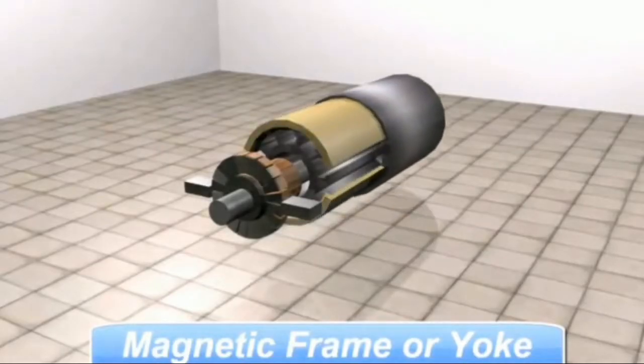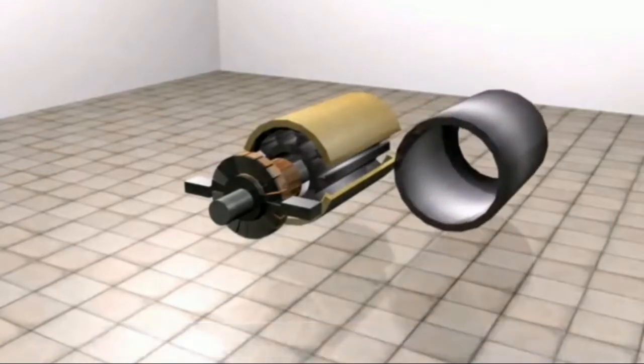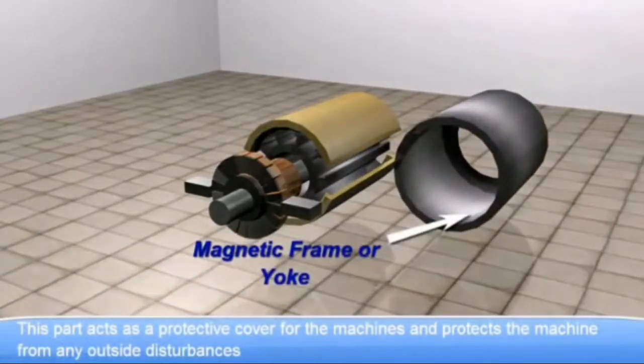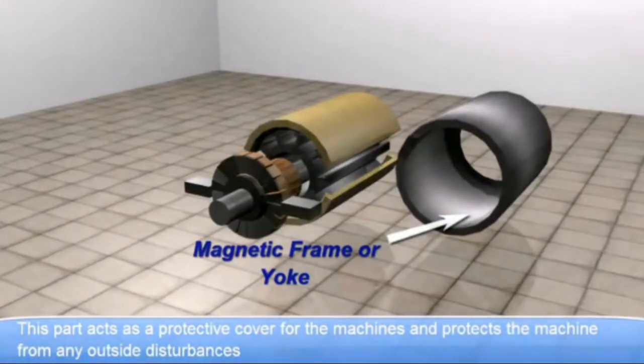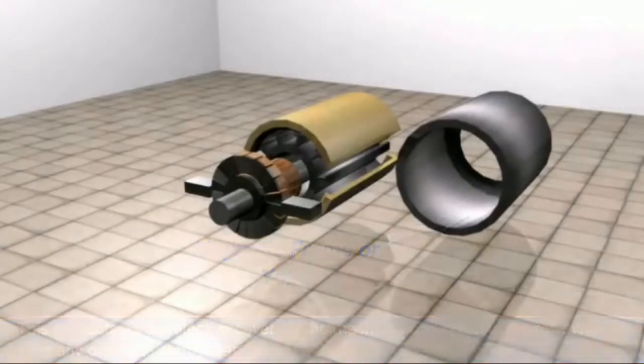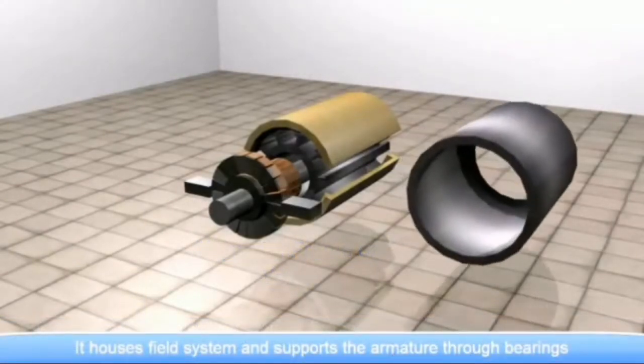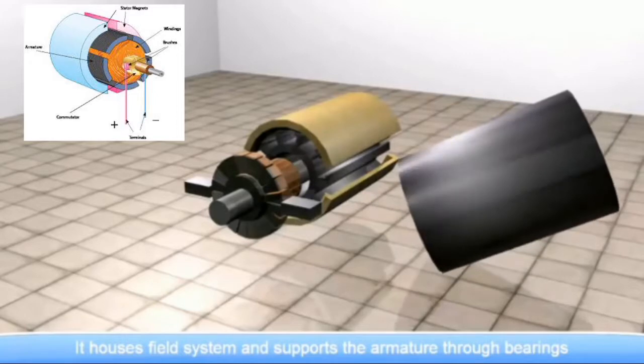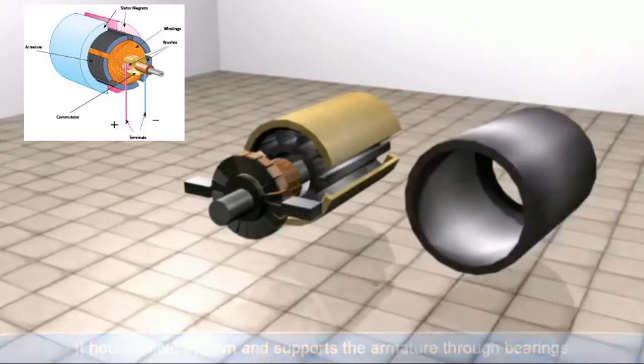Magnetic frame or yoke. This part acts as a protective cover for the machine and protects the machine from any outside disturbances. It houses the pole systems and supports the armature.